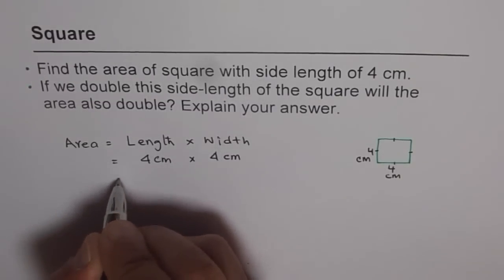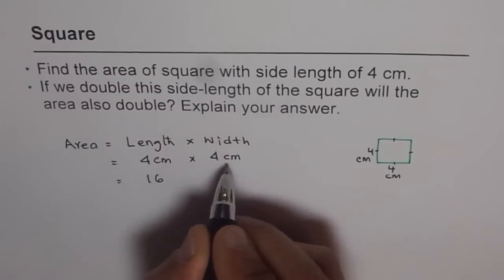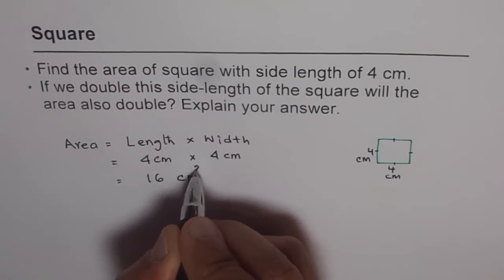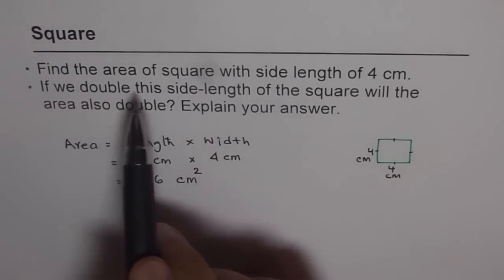When you do 4 times 4, you get 16. And the units are centimeter times centimeter. We normally write that as centimeter squared. So that is what we get for the area of our square. That is how you do the first part.